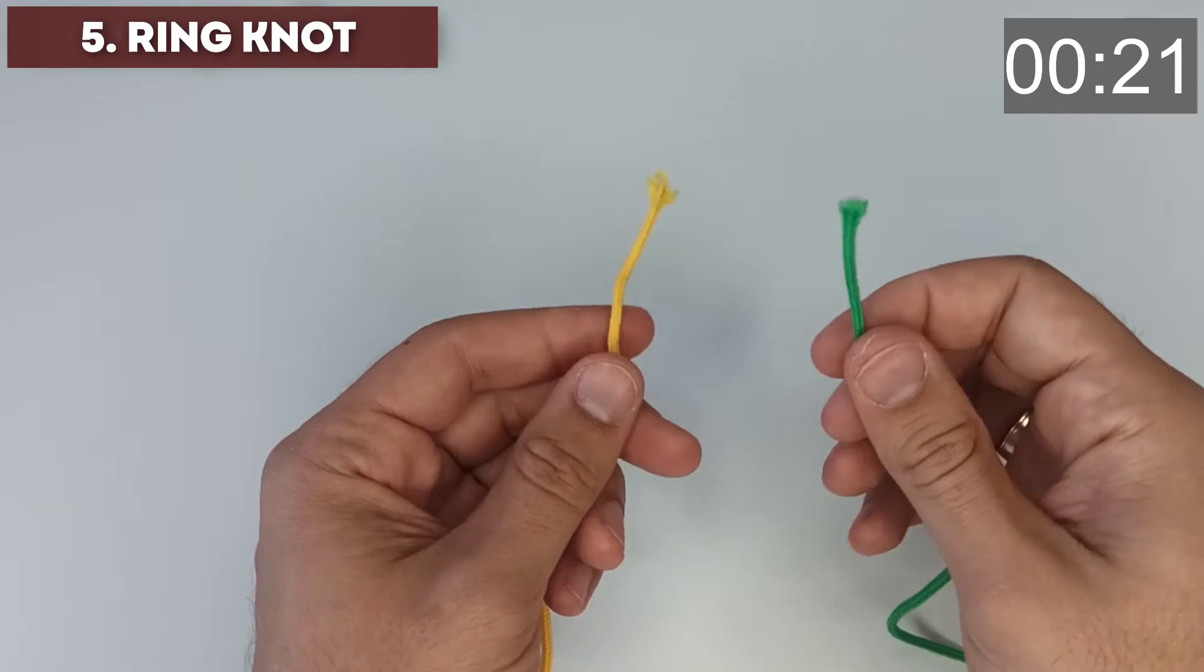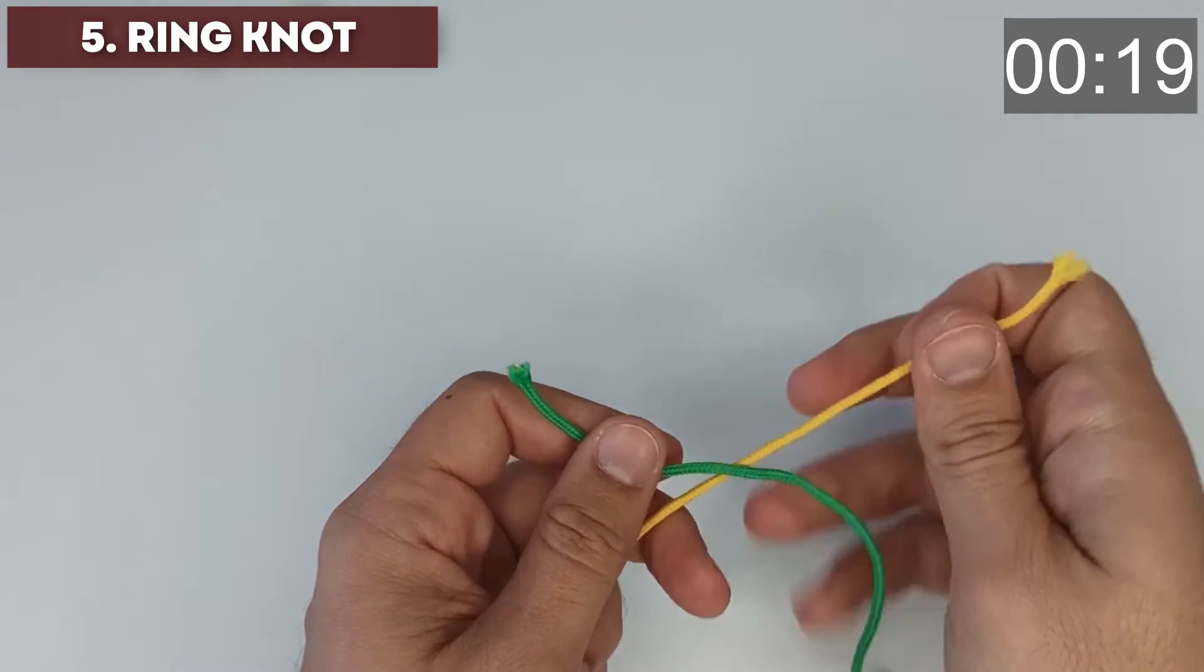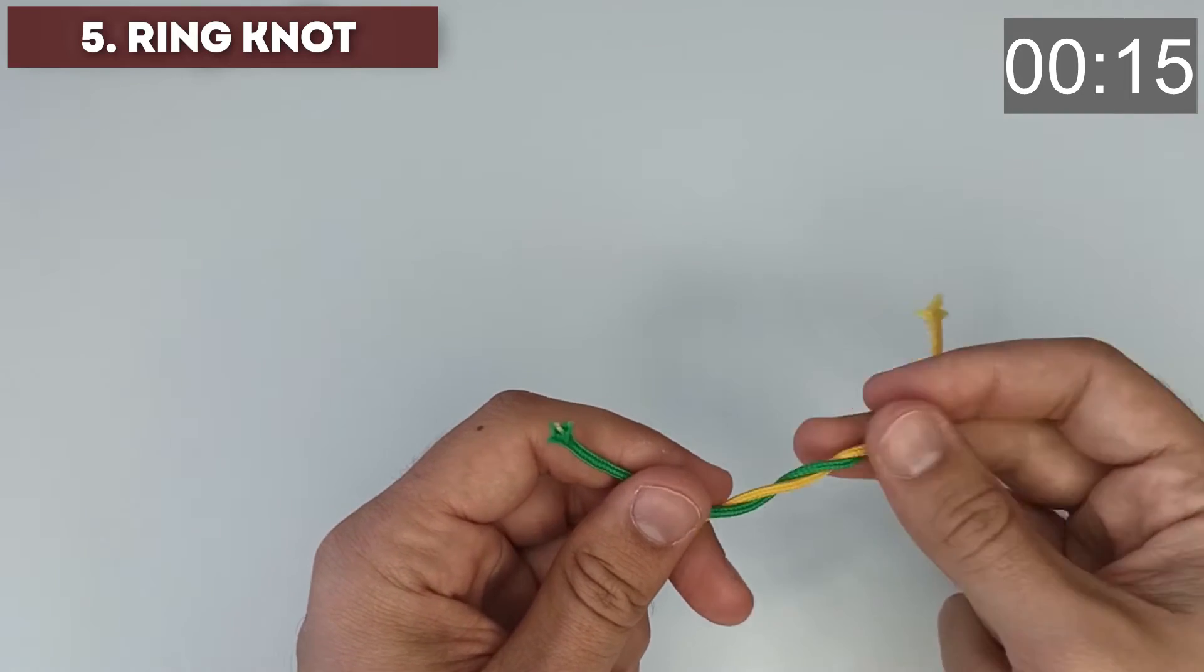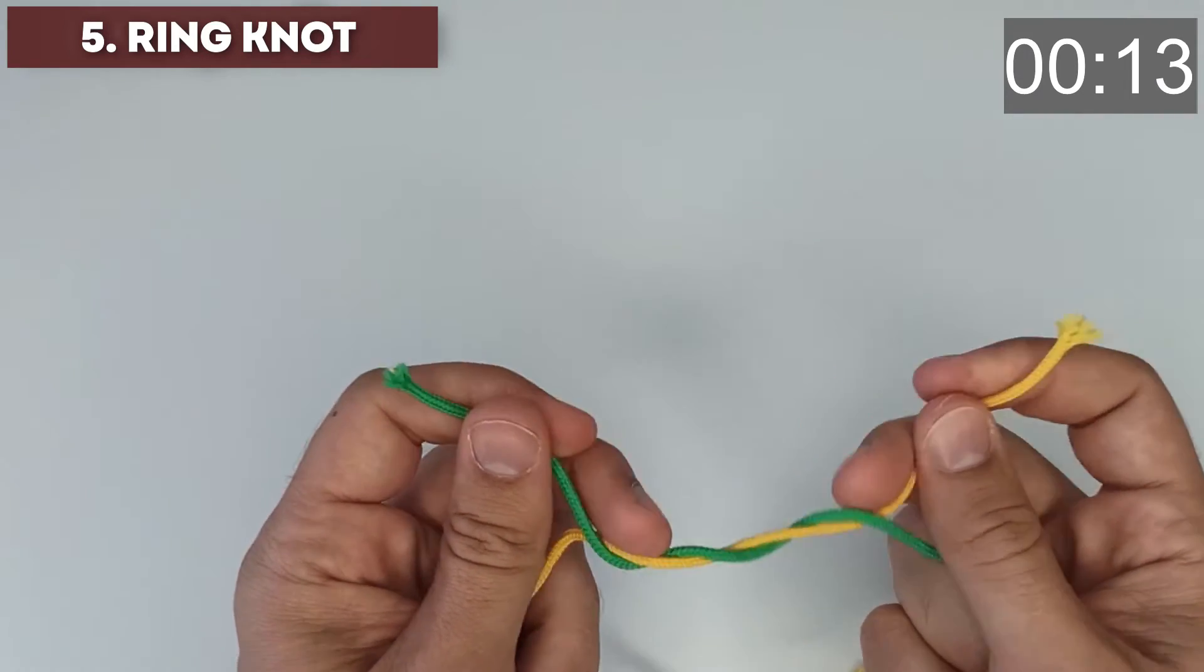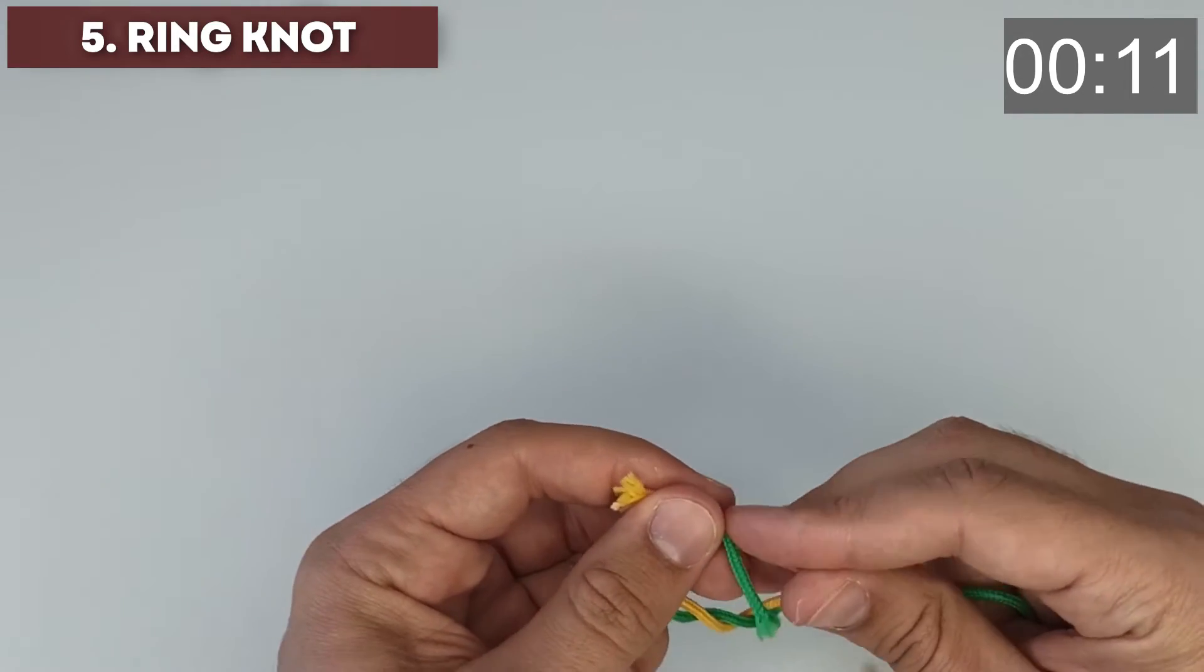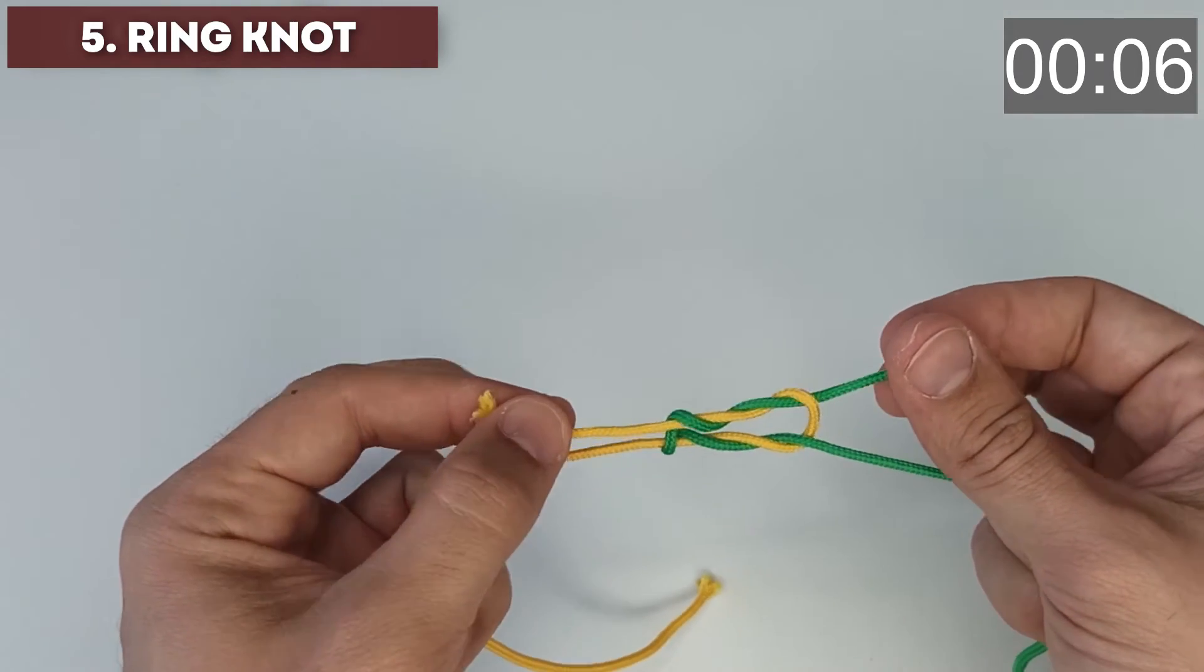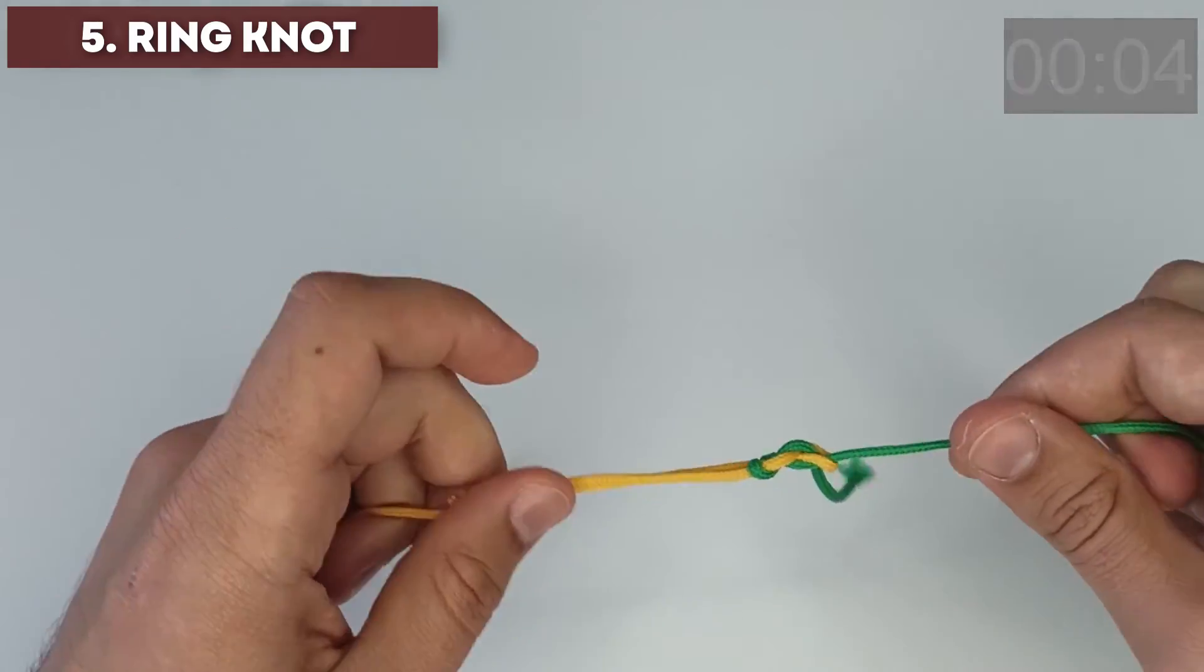Ring knot. Combine the ends of the lines. Weave them into turns, switching each other. Make a loop and two more turns. Tighten the knot evenly, holding the ends of the line.